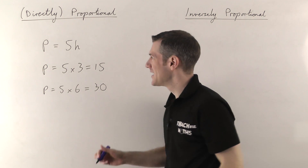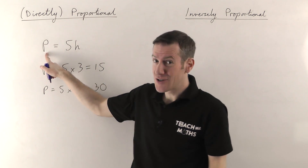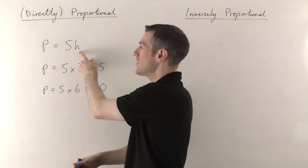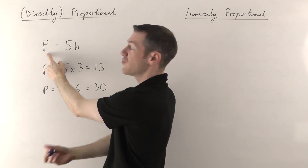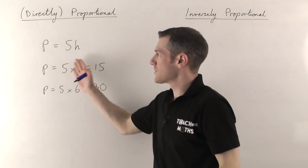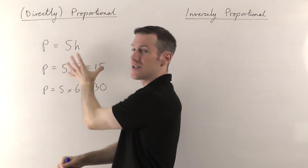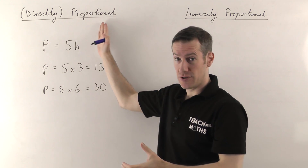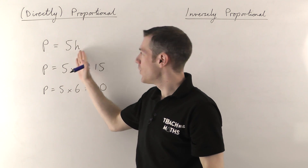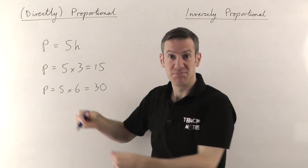This hopefully makes sense: if you work twice as long you get paid twice as much. Equally, if you work three times as long you get paid three times as much, and four times as long means four times as much. That relationship is what's called proportional — when one thing doubles, the other thing doubles as well.